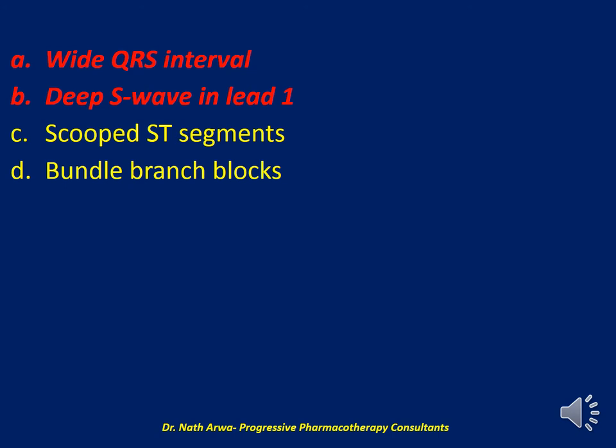Option D was meant to mislead you. Common ECG changes with beta-blockers in toxicity include sinus bradycardia, PR elongation, variable AV block, junctional rhythms, bundle branch blocks, and QRS prolongation. ECG changes with digoxin toxicity may include scooped ST waves — so option C was meant to trick you; that applies to digoxin. Apart from that, paroxysmal atrial tachycardia with AV nodal block, junctional rhythm, sinus bradycardia, V-tach, V-fib, and bradyarrhythmias can also occur in digoxin toxicity.